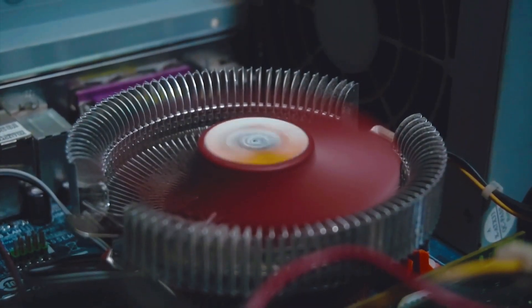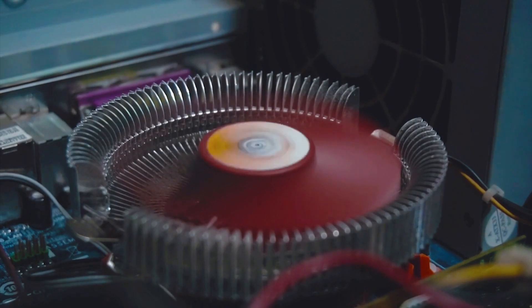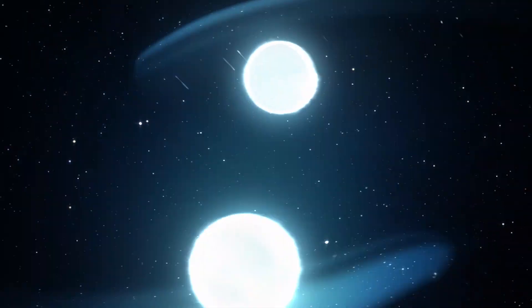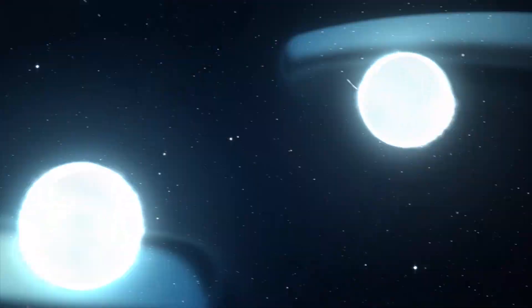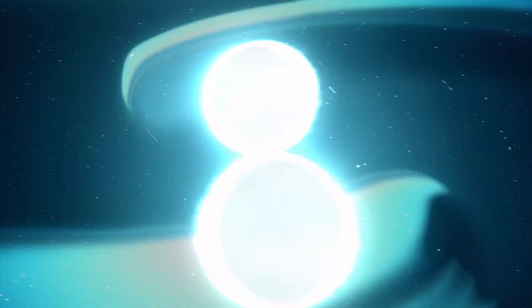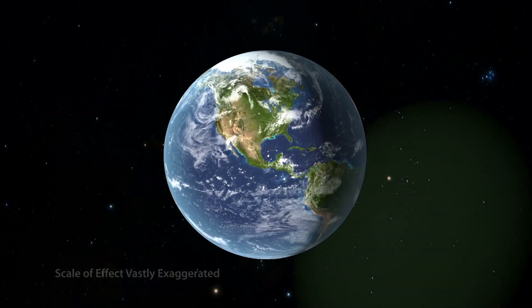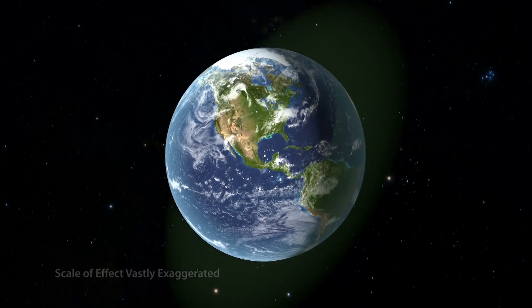Gravitational waves are invisible and incredibly fast. They move at the speed of light, which travels 186,000 miles per second. These waves can squeeze and stretch anything in their path as they pass by.